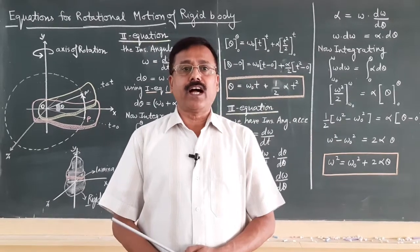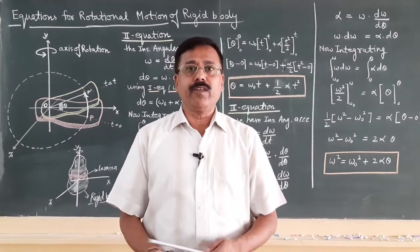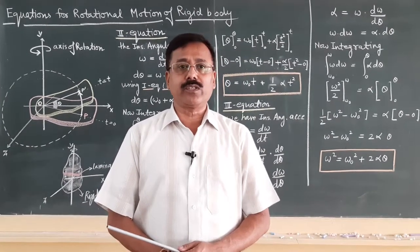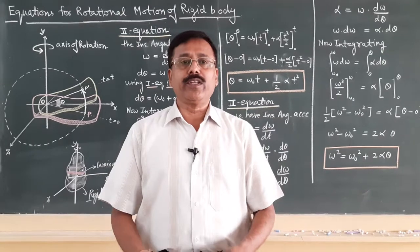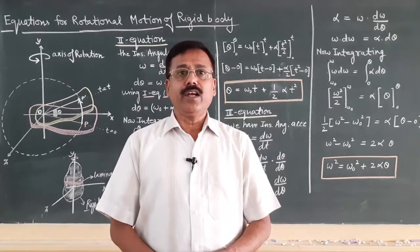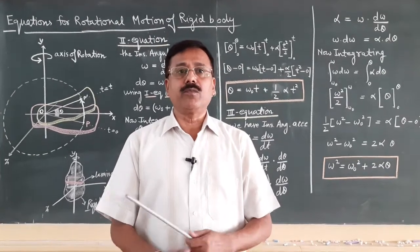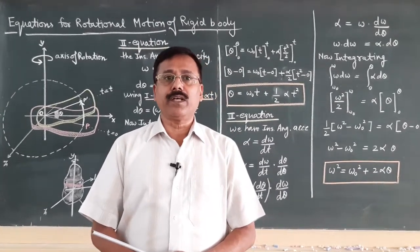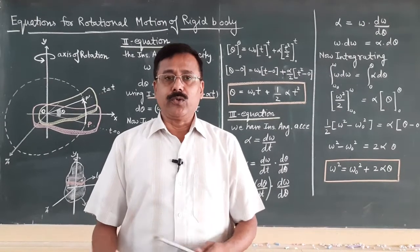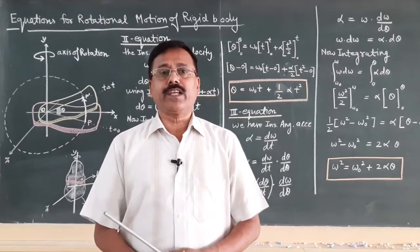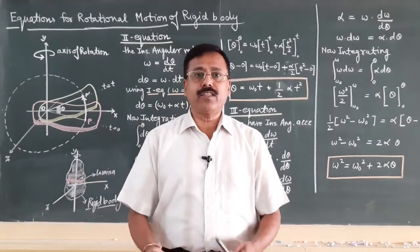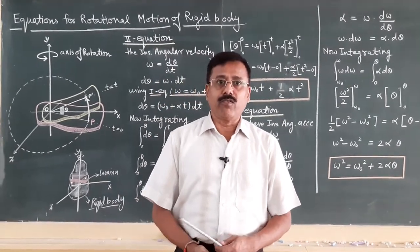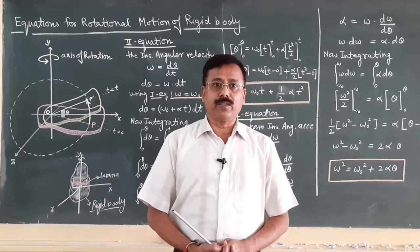In the previous class, we derived the first equation of motion during rotation, that is omega equals omega-zero plus alpha t. Today we will derive the second and third equations of motion for a rotating object.